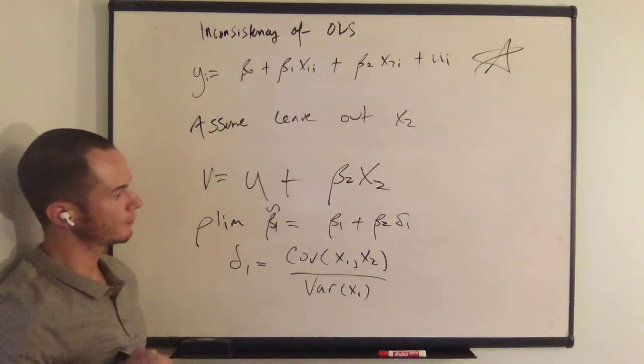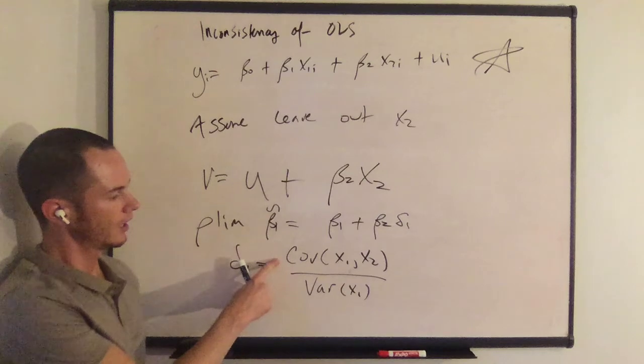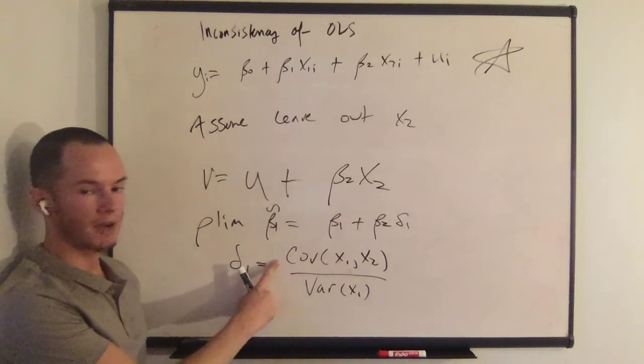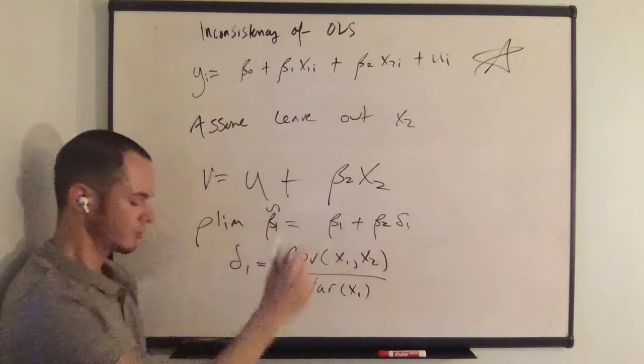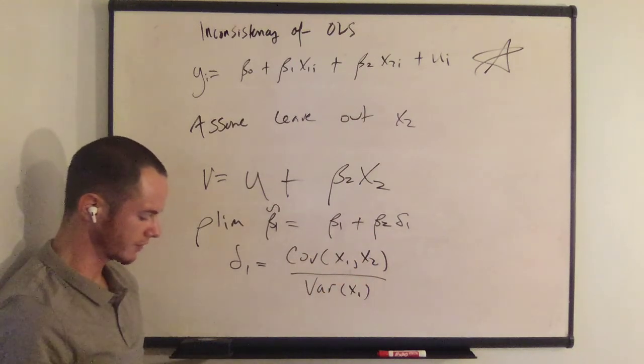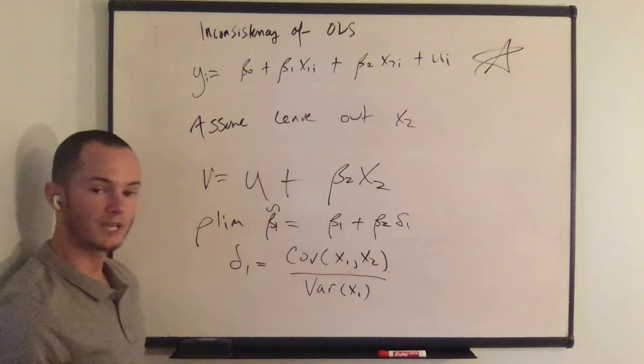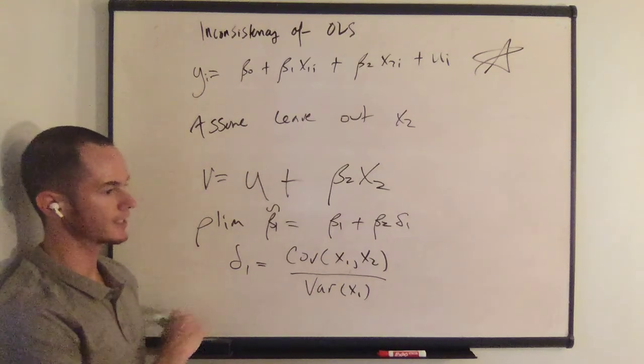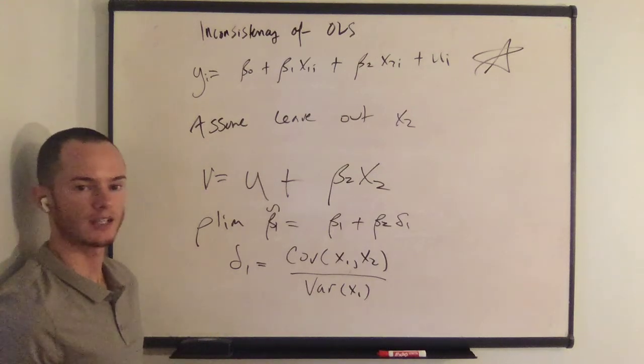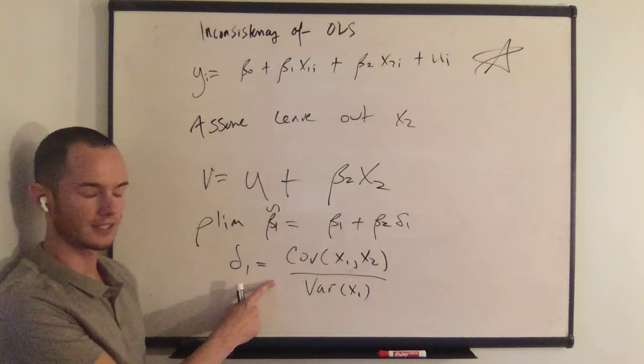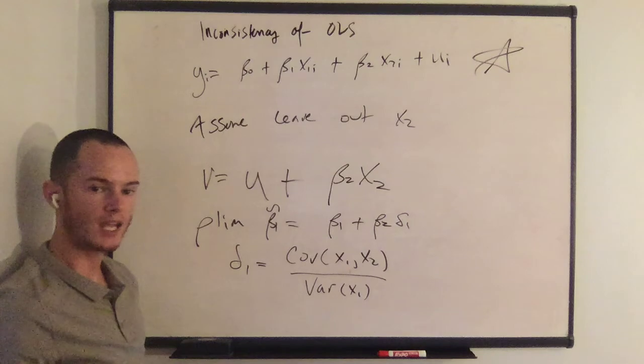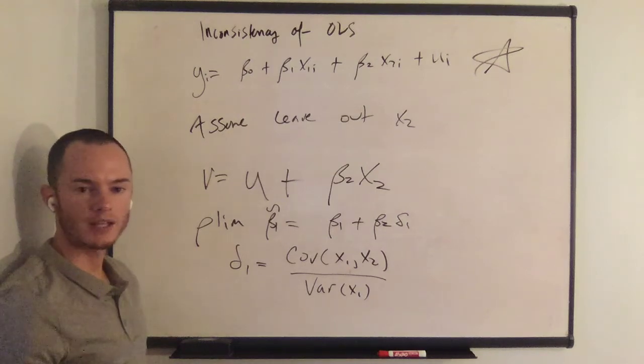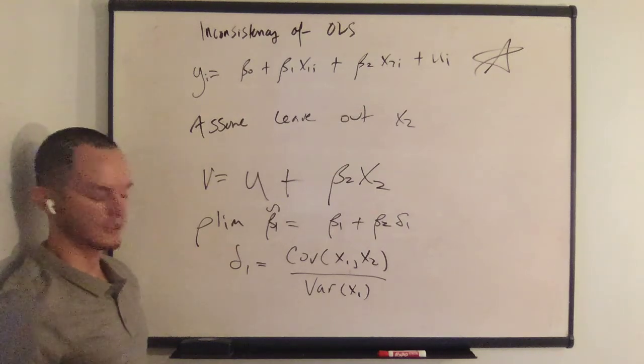And so in order for this to come about, you need both the covariance between x1 and x2 to be positive, and you need a positive beta 2. So x2 has to enter the regression function. You can obtain the sign of this bias the same way as you would obtain the sign of this inconsistency—the sign of this inconsistency the same way that you would obtain the sign of the bias as we discussed previously.